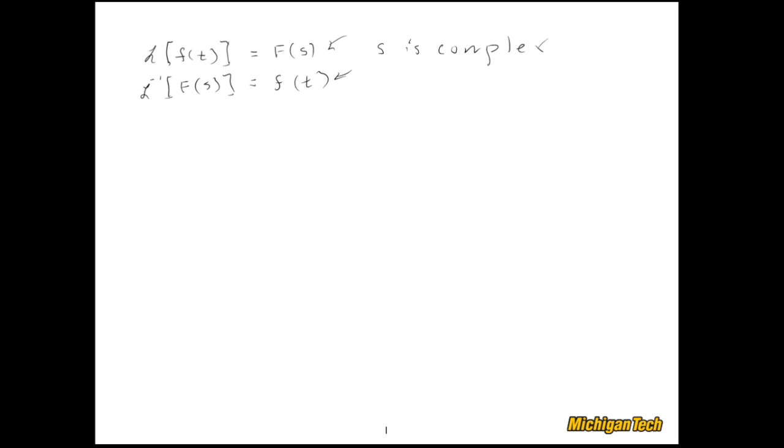Now let's look at the definition. Here it goes. So f of s is equal to the integral from 0 to infinity of whatever your function of time is, f of t, multiplied by e to the negative st, dt.